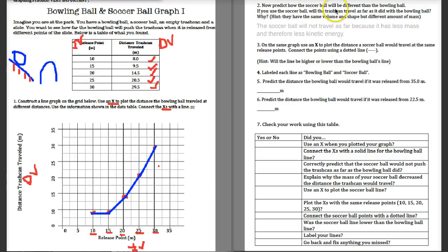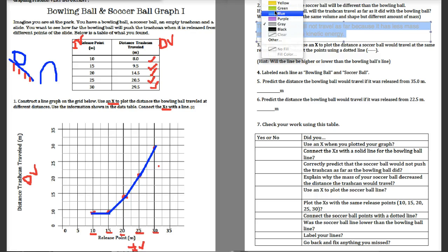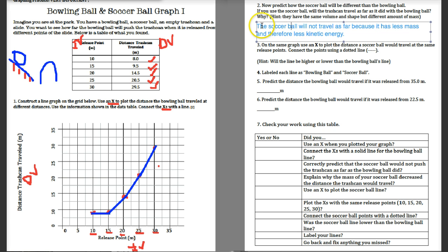Now predict how the soccer ball will be different than the bowling ball. If you use the soccer ball, will the trash can travel as far as it did with the bowling ball? Hint. They have the same volume shape but different amounts of mass. So, you all probably correctly guessed that a soccer ball would not push the trash can as far. And that's the only part of it. You can write, the soccer ball will not travel as far because it has less mass. Very important. Not less weight. And therefore, less kinetic energy. The three most important points here are that you tell me what your prediction was. You tell me what that has to do with its mass. And you tell me how that affects its kinetic energy. The three things.